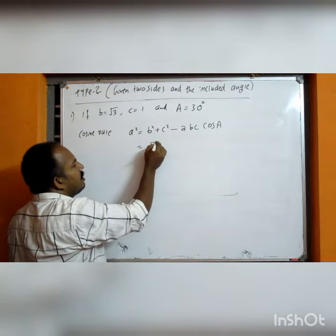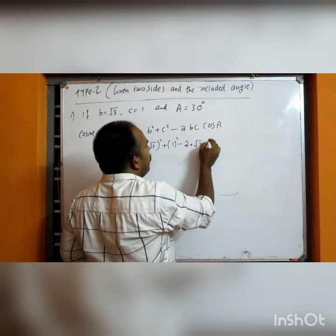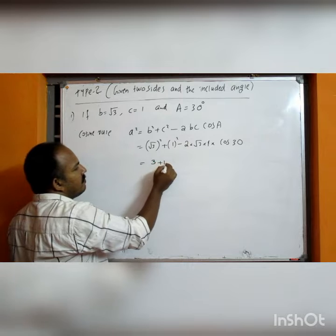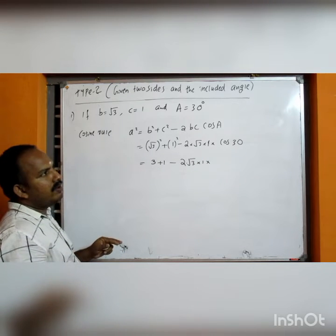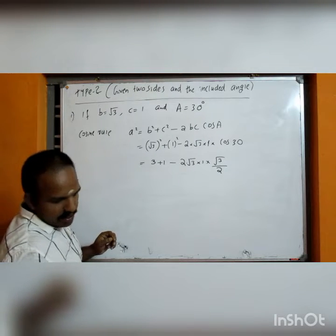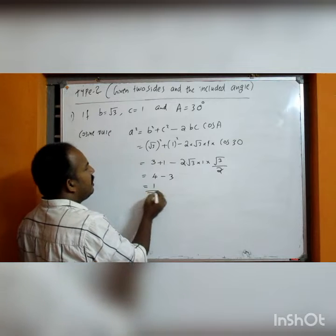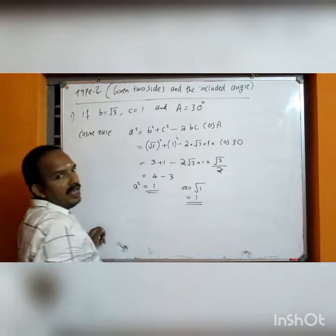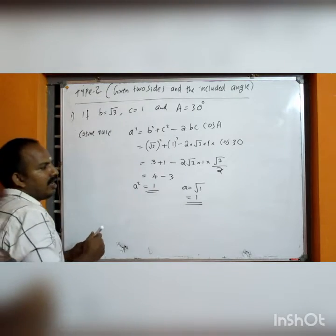Substituting: a² = (√3)² + 1² − 2 × √3 × 1 × cos 30°. That gives 3 + 1 − 2√3 × (√3/2). The 2s cancel, leaving 4 − 3 = 1, so a² = 1, therefore a = 1.